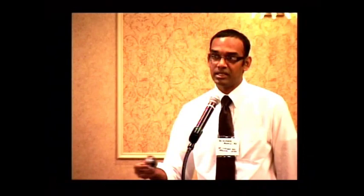Drugs that can worsen orthostatic hypotension include diuretics — water tablets generally given for hypertension — other blood pressure-lowering medications, certain antidepressants, and as Dr. Chitnis and Dr. Kimani mentioned, levodopa and related drugs in the Sinemet group can also cause a drop in blood pressure. This is something to keep in mind if you are on or about to start those medications.